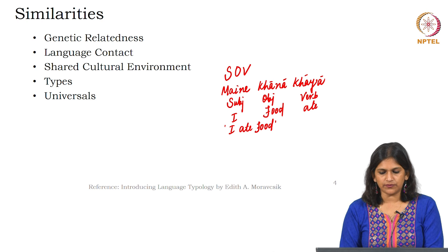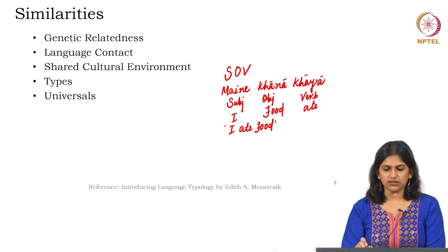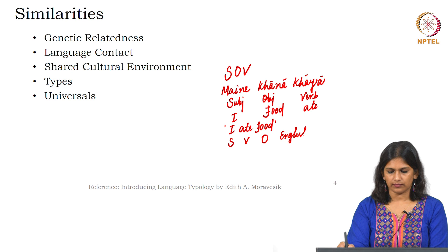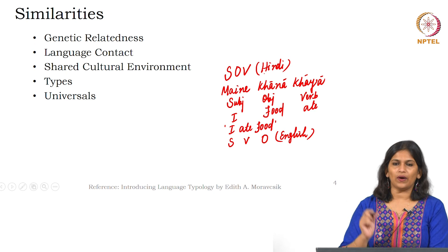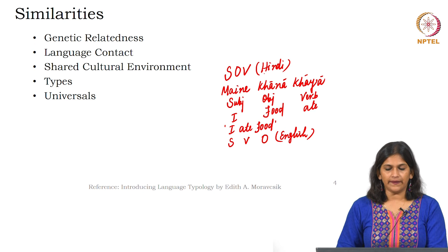Comparing the English example 'I ate food' with the Hindi example 'mai ne khana khaya', the clear difference that emerges is in word order. In English the order is SVO — subject, verb, object — whereas in Hindi it is SOV — subject, object, verb. I encourage you to check which word order your language follows, and which word order languages that you know follow.